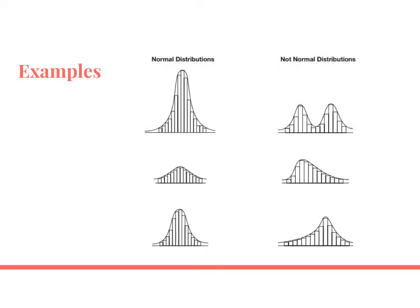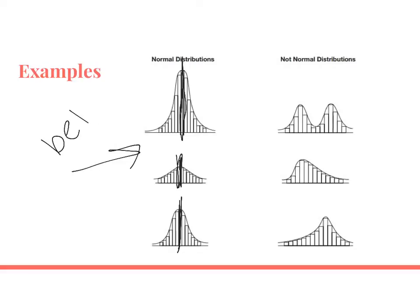Here are some examples and some non-examples. The ones on the left are all normal distributions — they each have one peak. The means of all these would be directly in the middle so that they cut the data perfectly in half. These are what we consider to be bell-shaped.